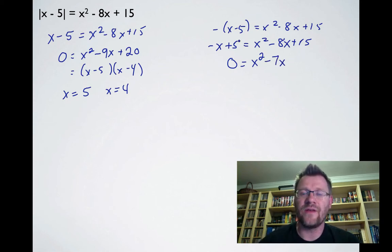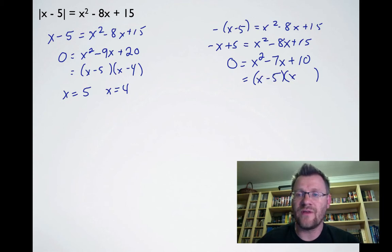This factors as (x - 5)(x - 2), giving us x = 5 and x = 2. Now we must check our answers by plugging them into the original equation.